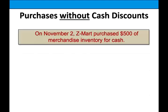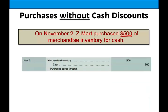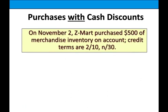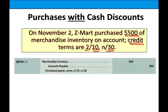Let's take a look at an example. On November 2nd, Zmart purchased $500 worth of merchandise for cash — simply debit merchandise inventory $500, credit cash $500. Now let's assume we made a purchase on account with credit terms 2/10, n/30. The journal entry is the same: debit merchandise inventory $500, credit accounts payable $500.